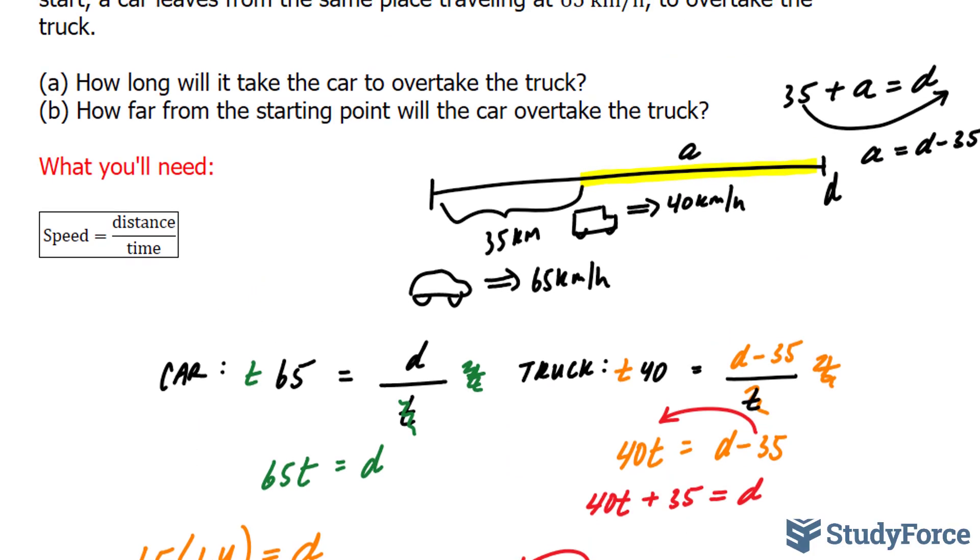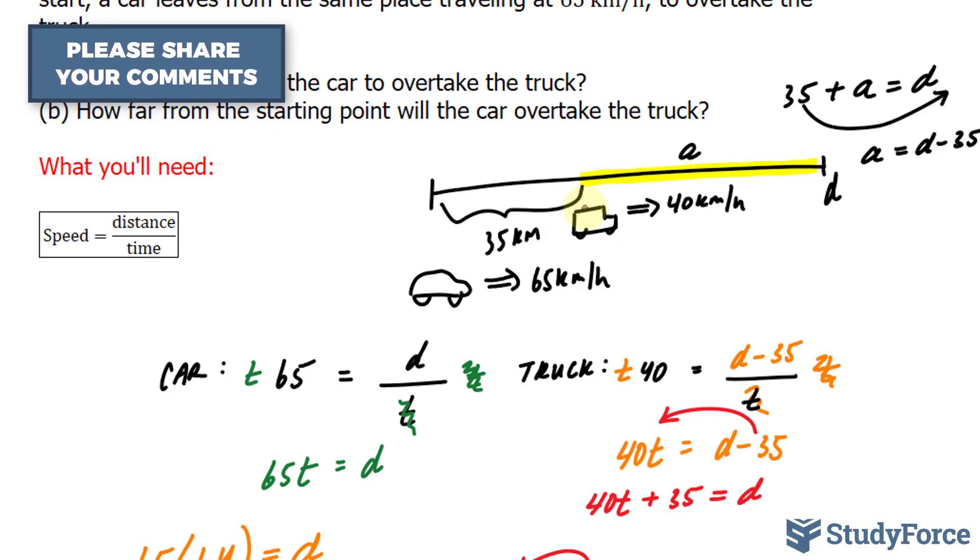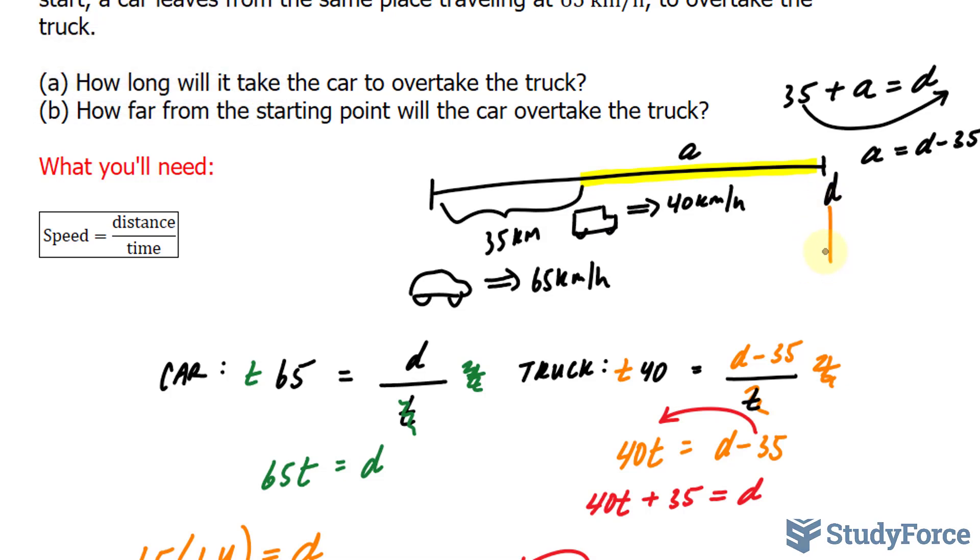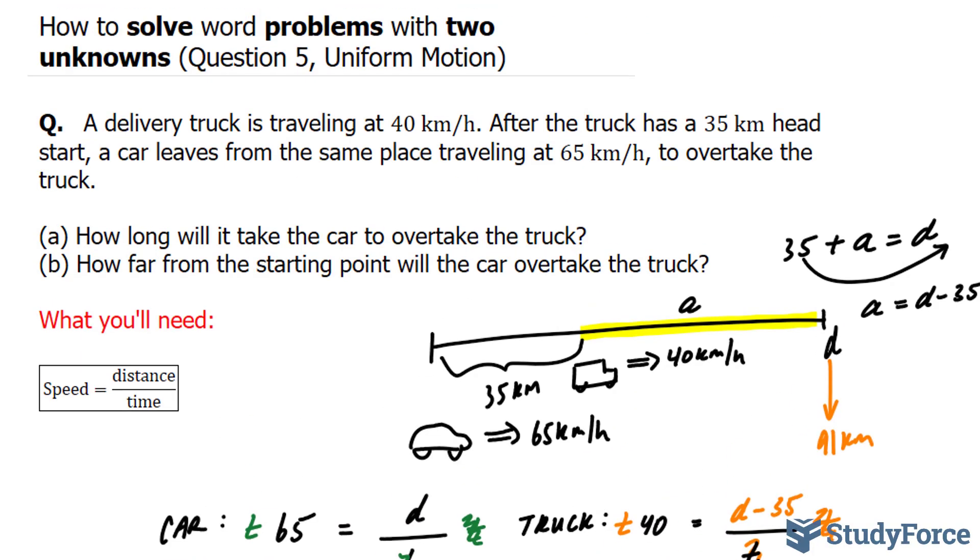To summarize what just happened here, this car, if it starts at the beginning and travels 65 kilometers an hour, meanwhile, the truck continues at a pace of 40 kilometers an hour, but has a 35 kilometer head start, they will meet 91 kilometers away from the starting point. And that will take 1.4 hours. So there you have it. That is how to solve word problems with two unknowns.